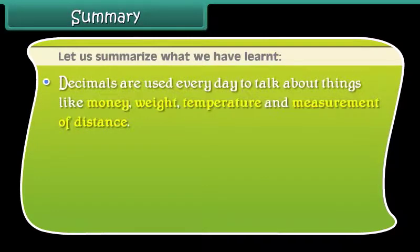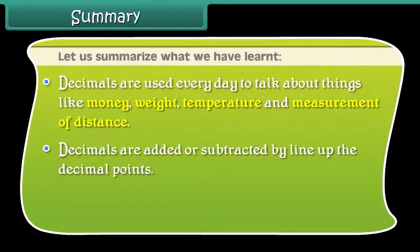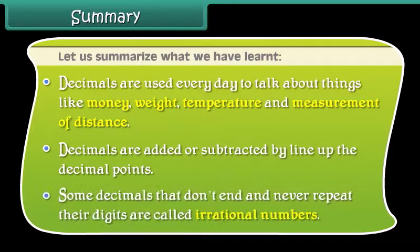Decimals are used everyday to talk about things like money, weight, temperature and measurement of distance. Decimals are added or subtracted by lining up the decimal points. Some decimals that don't end and never repeat their digits are called irrational numbers.